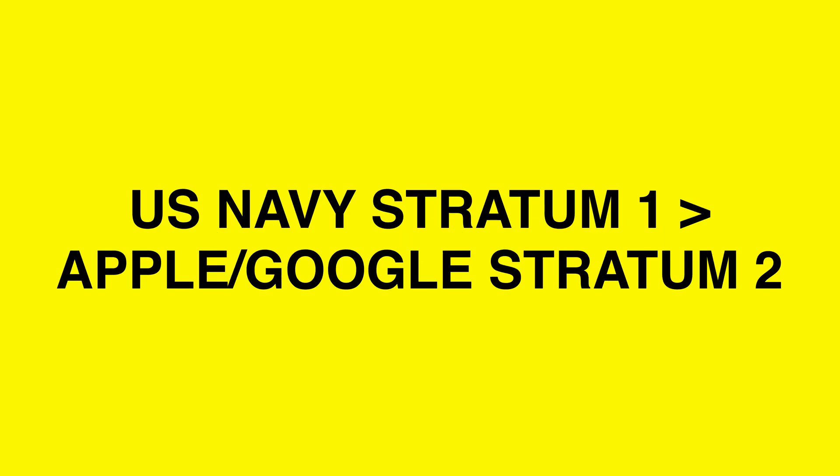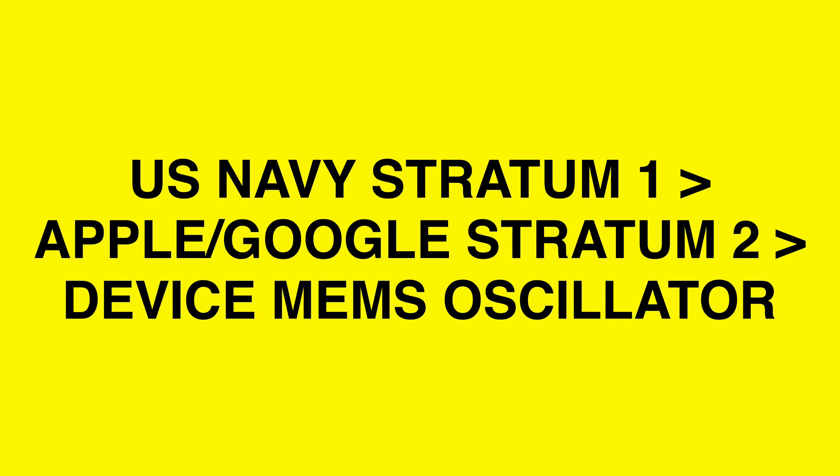First things first, I want to do a little bit of explaining about NTP UTC. This sounds a lot more complicated than it really is, because NTP is really just the time we all see displayed on our smartphones. NTP stands for Network Time Protocol. The time you see on your phone has been pushed from the US Navy Stratum 1 NTP servers to Apple Stratum 2 server, or Google Stratum 2 server, and from there onto your smartphone, which has a MEMS oscillator built in to keep time between updates from the server.